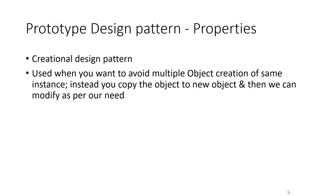First, what are the properties? It is a creational design pattern — creational because it is related to the creation of objects. Basically, it is used when we want to avoid the multiple creation of the same objects. So let's say there is a vehicle list and we create an instance to get the vehicle list. If we call get vehicle list again and again, there is no point in calling the object for the same thing.